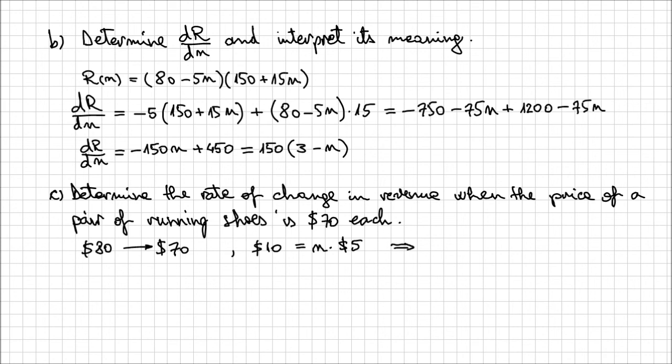In other words, n = 2. For two price decreases of $5 we get a price decrease of $10. That means we can evaluate the rate of change of the revenue, since we already have the expression for the rate of change of revenue in regards to the number of price decreases.